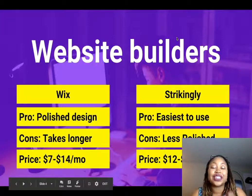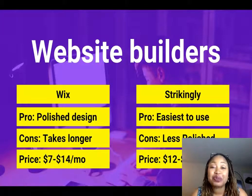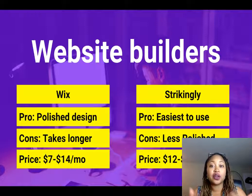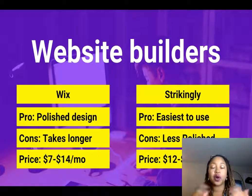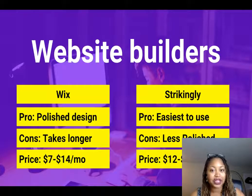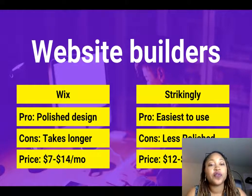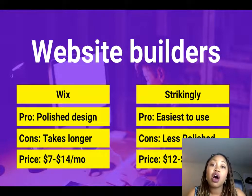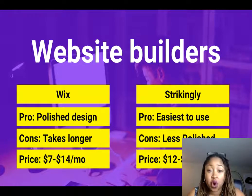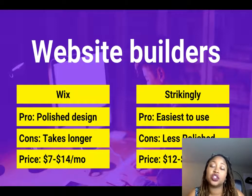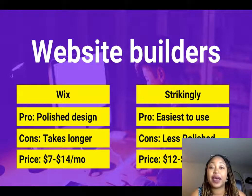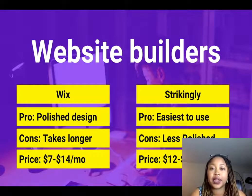I want to talk to you about the different options you have for software you can use for building your website. Now, if you already have a website, don't worry about this. But if you're looking for new software for your website, this is great. Also, by the way, if you already have a website, you might want to use a tool to create quick landing pages, like landing pages specifically for different companies.